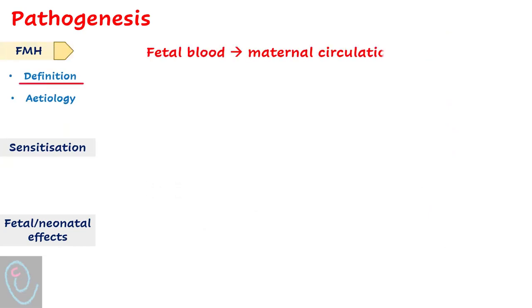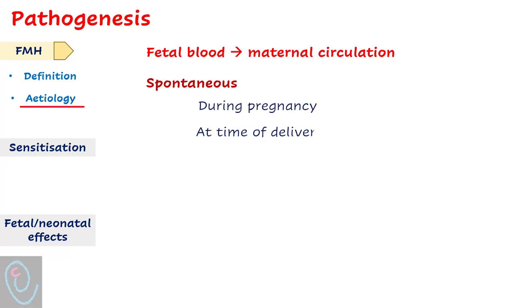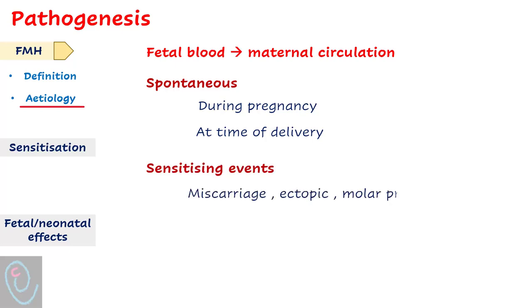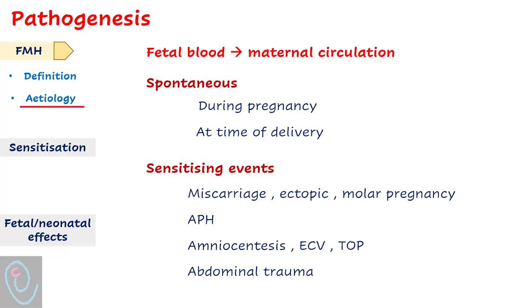Fetomaternal hemorrhage is the passage of fetal blood into maternal circulation. It occurs spontaneously throughout pregnancy; however, the most significant fetomaternal hemorrhage occurs at the time of delivery. Some events could trigger fetomaternal hemorrhage, known as sensitizing events, such as miscarriage, ectopic pregnancy, evacuation of molar pregnancy, antepartum hemorrhage, procedures such as amniocentesis, external cephalic version, termination of pregnancy, and abdominal trauma.